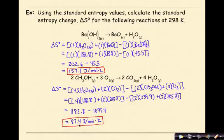I find the difference between the values of the products minus the values of the reactants, and my end result is 87.4 joules per mole Kelvin, again a positive value, which means that as this reaction proceeds, there is an increase in entropy.